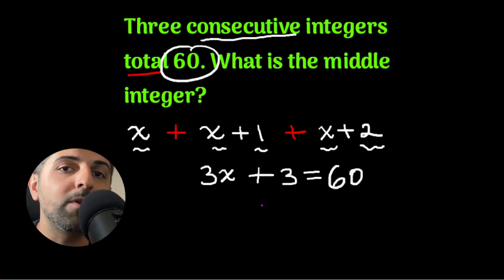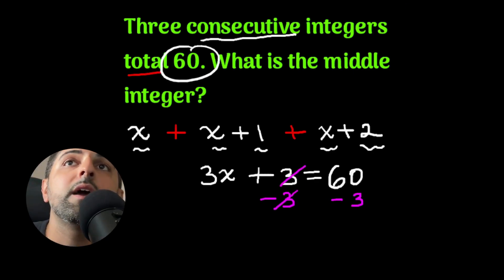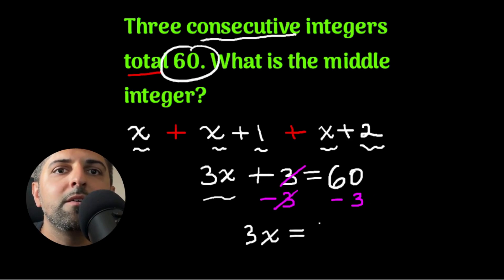I can solve for x, so let's isolate for x. Subtract 3 from both sides to cancel out the 3. And so I get 3x equals 60 minus 3, which is 57.